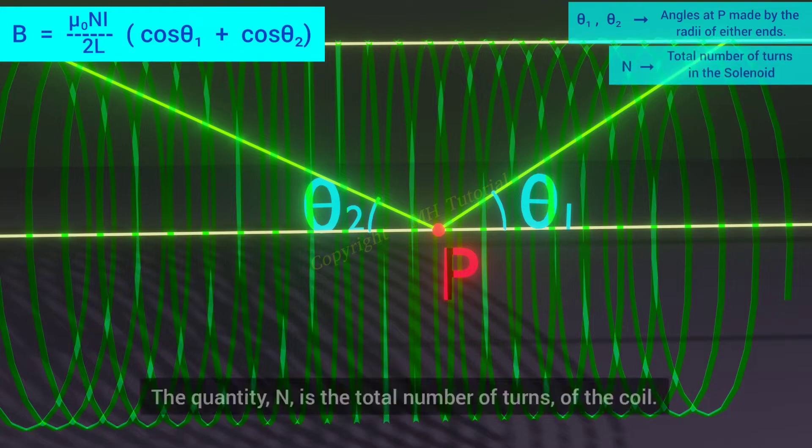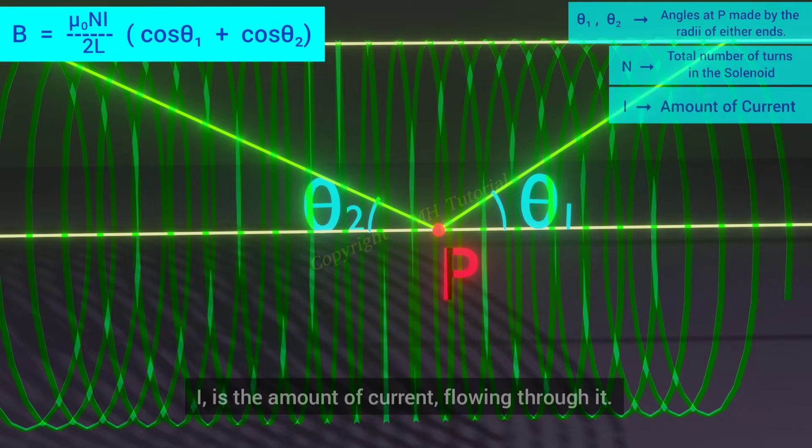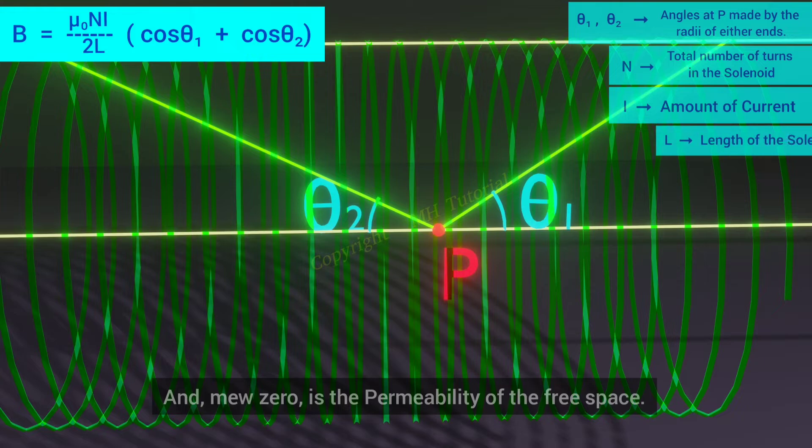The quantity n is the total number of turns of the coil. I is the amount of current flowing through it. The length of the solenoid is L.